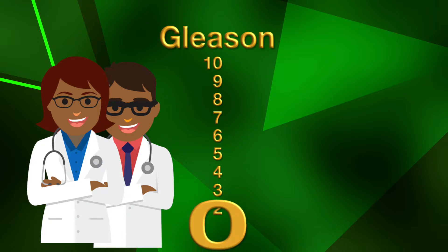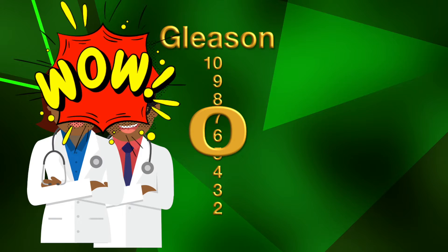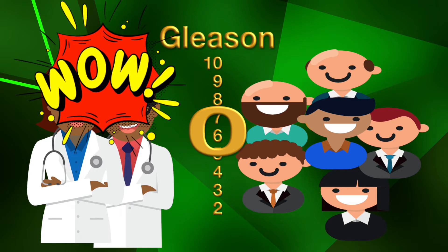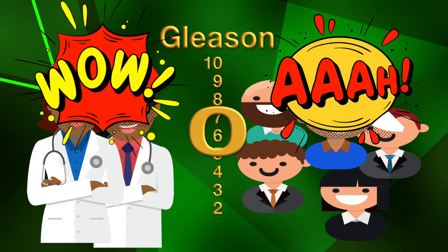Gleason score 6 is the lowest score doctors report. But in a patient's mind, if 10 is the maximum score, a score of 6 out of a possible 10 is not harmless but obviously greater than halfway up the aggressiveness scale. Despite advice that it might not be in his best interest, a man may be very attracted to immediate radical treatment.